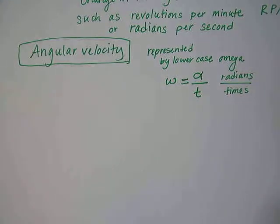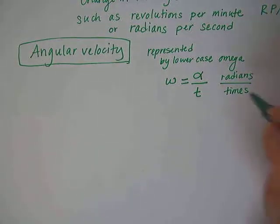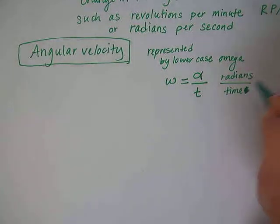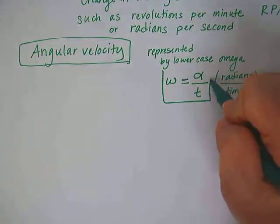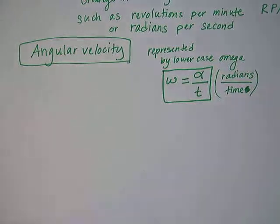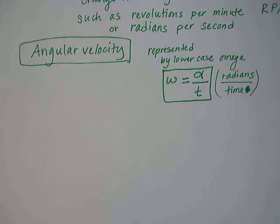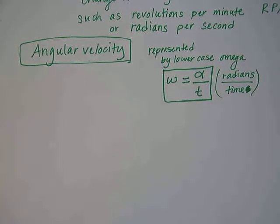Whatever time unit you want to use. Seconds, minutes, hours, whatever happens to apply to your problem. Time. So there is your formula to find angular velocity, which kind of makes sense because we just said the angular velocity is an angle divided by time. Change in angle divided by time.